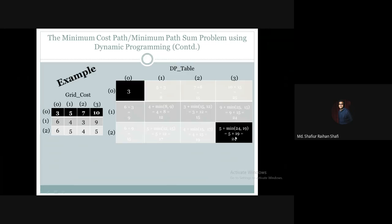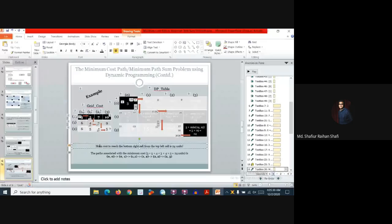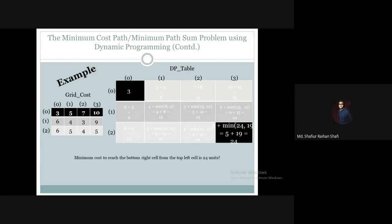So to reach this bottom right cell from the top left cell, the minimum associated cost is 24 units. All right, let me fix this.